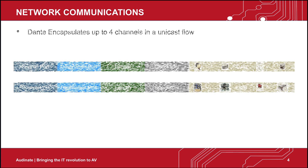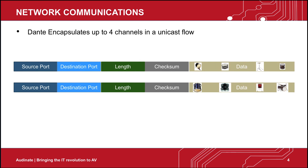Dante encapsulates up to 4 channels in a unicast flow. But what if my box has more than 4 channels? How does Dante handle that? If you recall your previous Dante trainings, you will know that Dante simply creates another flow for the 5th channel.